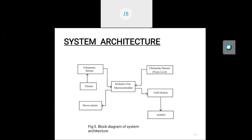The second ultrasonic sensor, fitted at the upper portion of the lid pointing toward the depth of the dustbin, monitors the waste level. When the waste level crosses the threshold set through the Arduino, the sensor sends data to the Arduino. The Arduino then instructs the GSM module to send a notification via SMS to the admin, who then collects the waste from the dustbin.